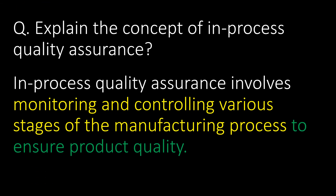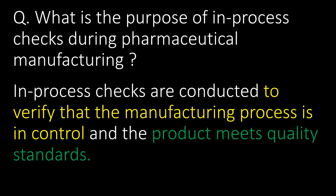Explain the concept of in-process quality assurance. In-process quality assurance involves monitoring and controlling various stages of the manufacturing process to ensure product quality. The purpose of in-process checks during pharmaceutical manufacturing is to verify that the manufacturing process is in control and that the product meets quality standards.